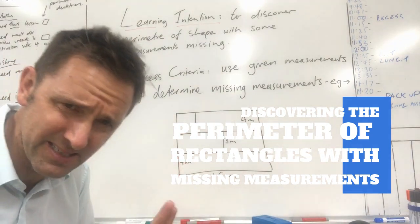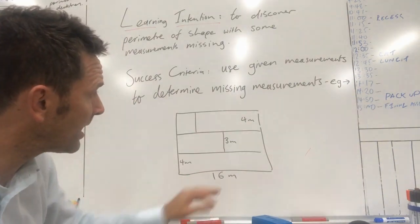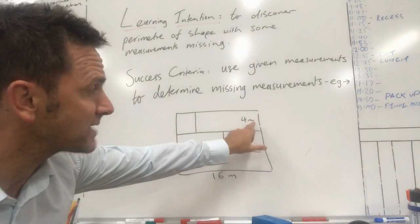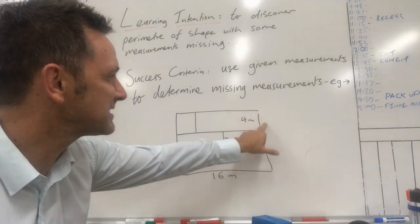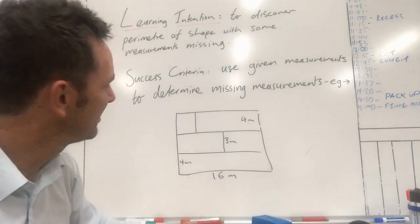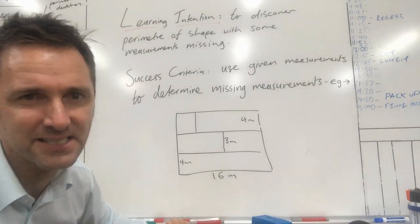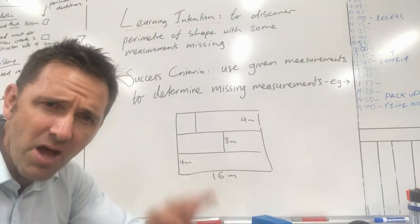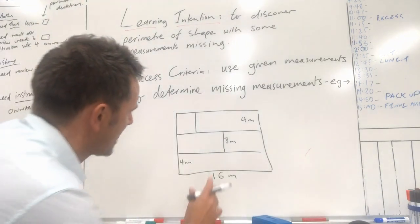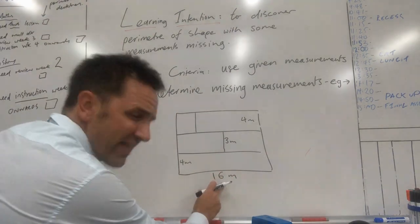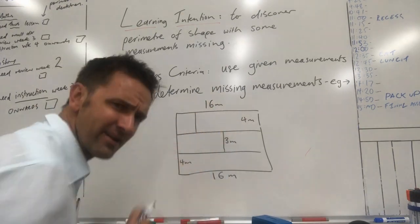Sometimes you're given some measurements and you can use those to find the rest of them. For example, here's a rectangle I've drawn — not to scale. We know that this is four metres, we know that this is three metres, we know that's four metres, and we know this down here is 16 metres. We want to find the perimeter, the distance around the shape.